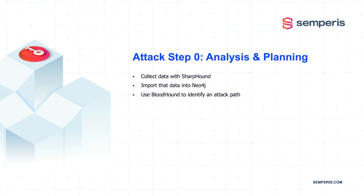We're going to go through a whole attack path over the course of this webinar. I'll be doing the attacking. The first thing I want to show you is kind of a step zero of that attack path — analysis and planning. We'll collect some data with SharpHound, which is the data collector for BloodHound. We'll import that data into a special database called Neo4j, which is a graph database. Then we'll use the BloodHound GUI to identify an attack path to our objective.